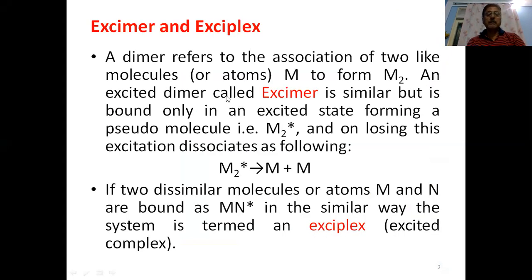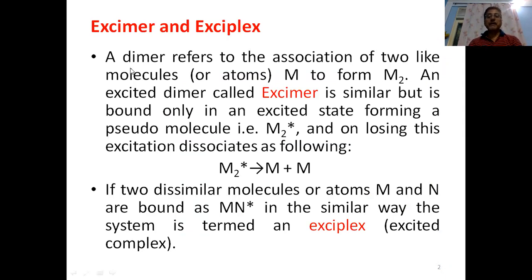We have two types of molecules to consider. One is a dimer, in which two similar molecules or atoms make an association, like M and M to form M2. If a laser is made out of this kind of molecule M2 of similar atoms or molecules, we call that the excimer laser — basically, it is an excited dimer.